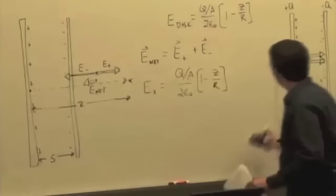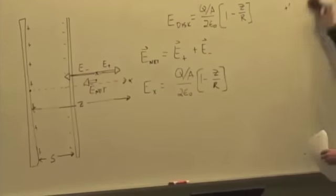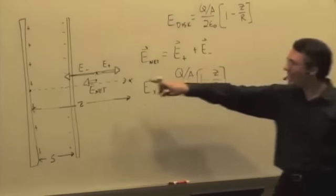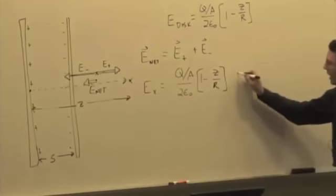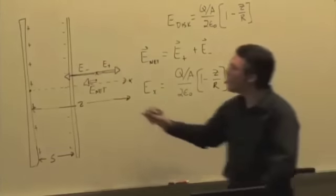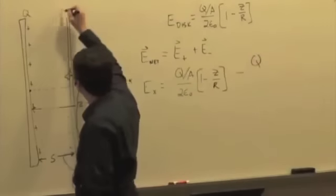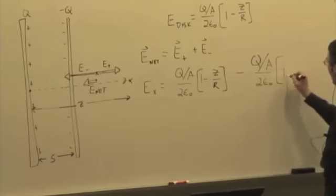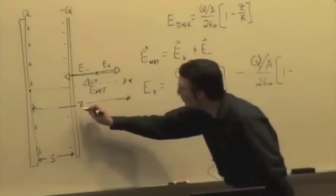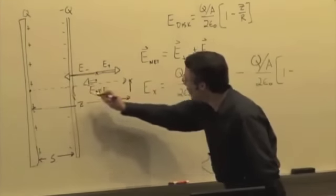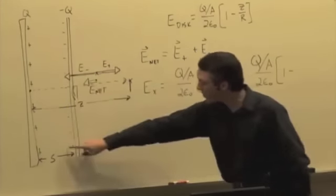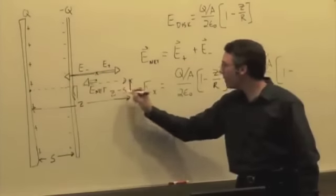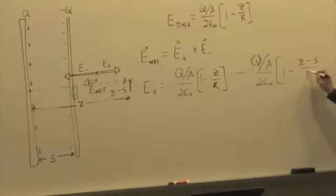And then we have the electric field due to the negatively charged plate. So we have the field due to the negative charge is pointing in the negative x direction. So it's going to have a negative x component. The q here I'm just saying is a positive number, so this is q and this is negative q. q over a over 2 epsilon 0, I have 1 minus – now what's this distance? What is the distance from this plate to this observation location? If this is s and this is z, then this distance is z minus s. So we have 1 minus z minus s over r.